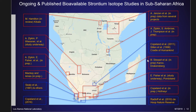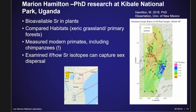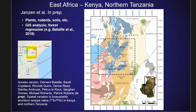Moving up to Uganda, Marianne Hamilton — who finished her PhD last year from New Mexico — is doing a bioavailable strontium study that's very different from the others. She's taken many plant and other samples and is comparing different habitats. Most interestingly, she also has modern primates from Uganda, including chimpanzees, and is studying how strontium in different primates relates to their habitats and whether strontium isotopes can capture sex dispersal. She has two papers in review right now.